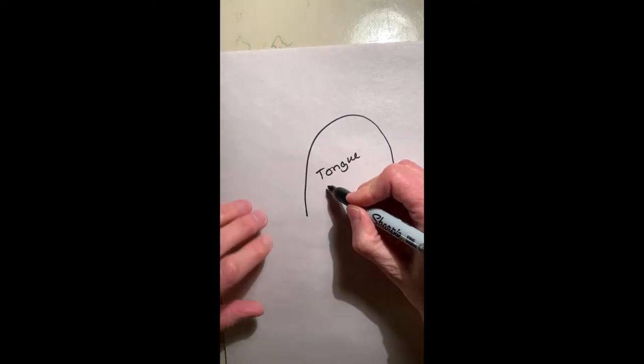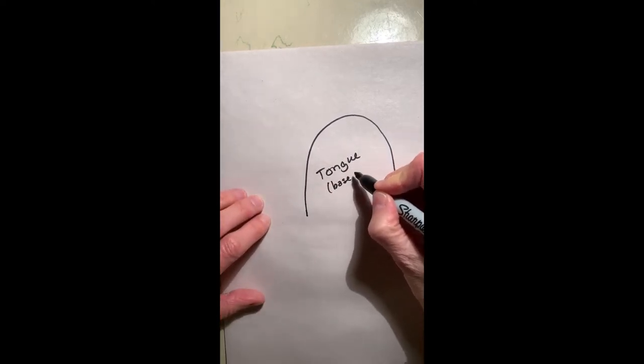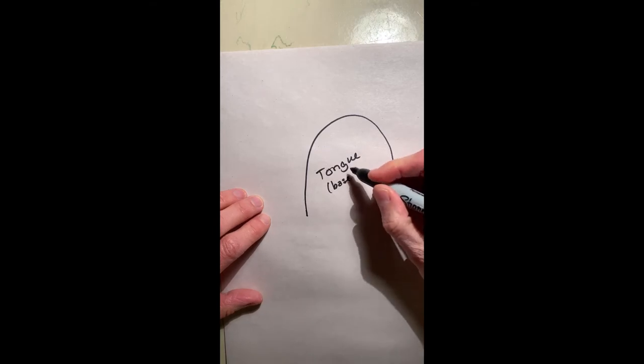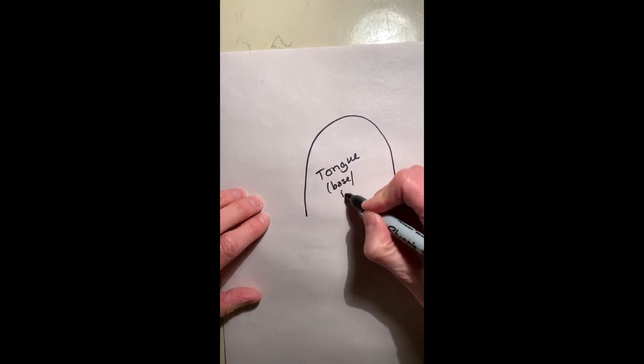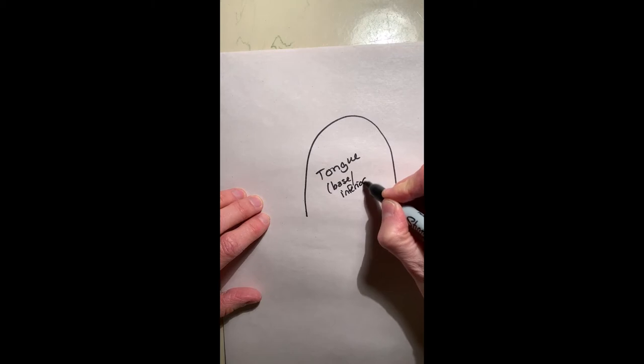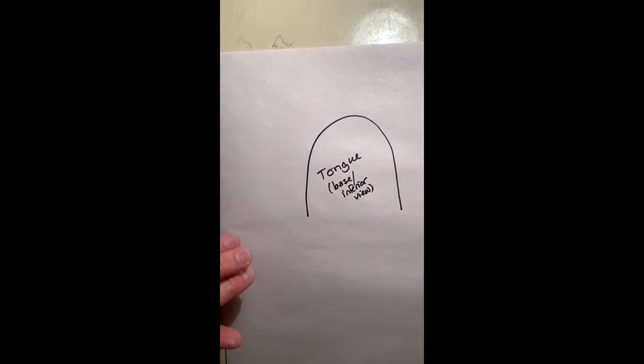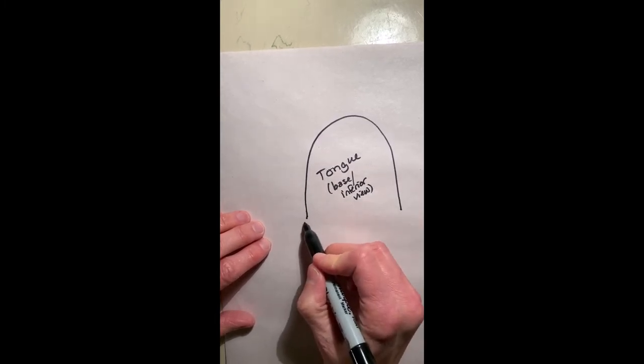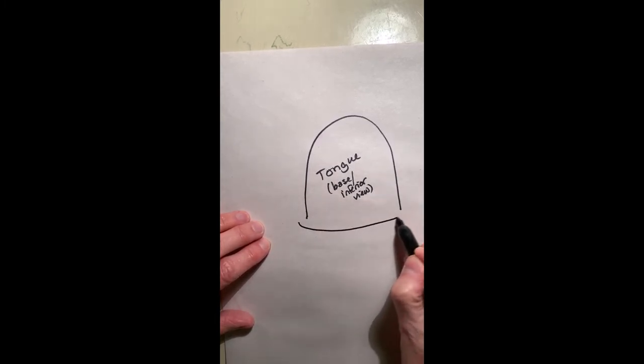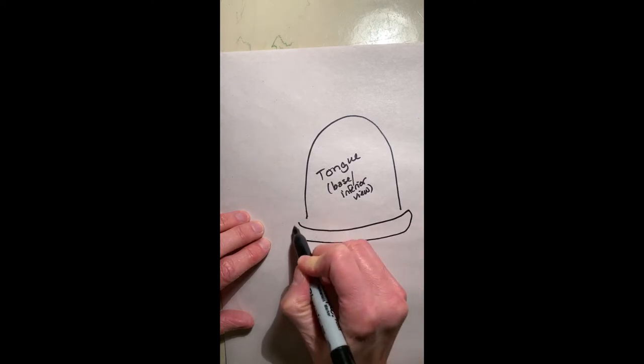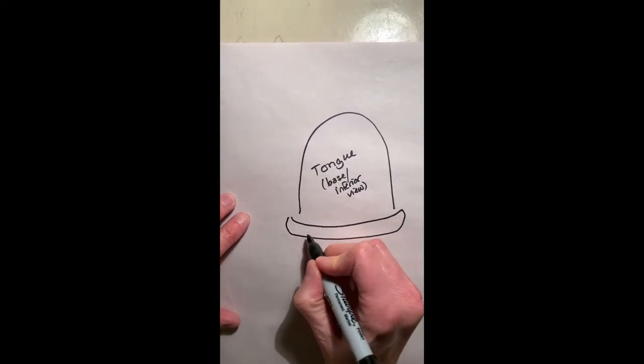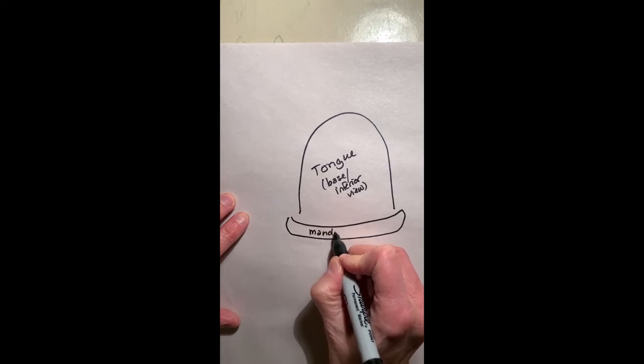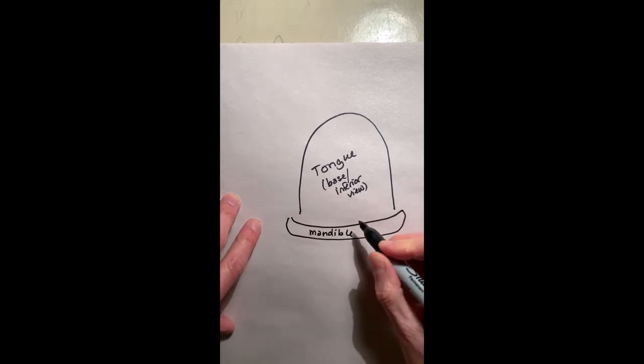So if you look at the tongue, this is the base or underneath, or we could say this would be from the inferior view. Pretend we're looking underneath the tongue, and we can see that the tongue is attached to the mandible, the jaw.